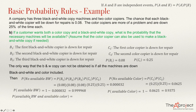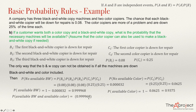The question asks for the probability that both a black and white copier and a color copier are available. Using independence, we multiply: 0.999968 × 0.9375, and the answer is approximately 0.9375. This answers question B.